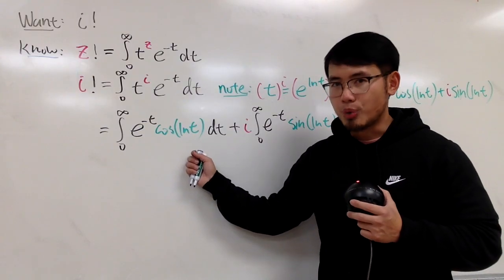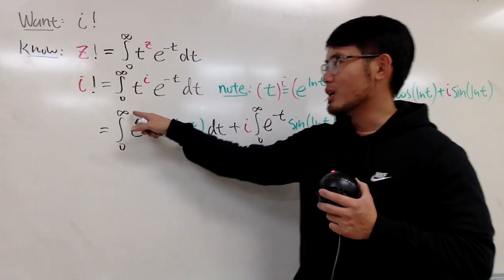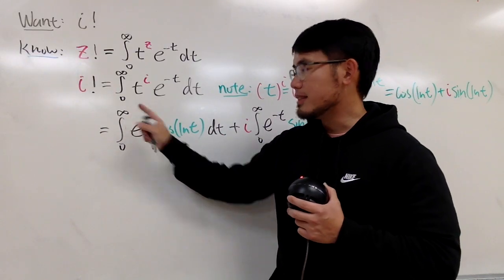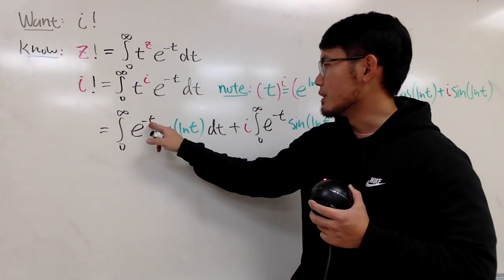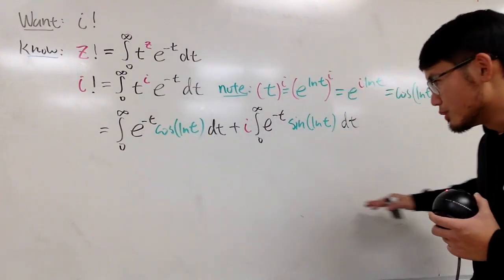But, this is still an improper integral at two places. The first place is, of course, you have the infinite interval, the infinity right here. But, this right here is not that bad to fix. Because, if you think about it, if you plug infinity into the t and the t here, e to the negative t, well, it's going to be approaching 0.